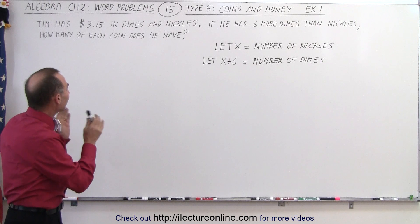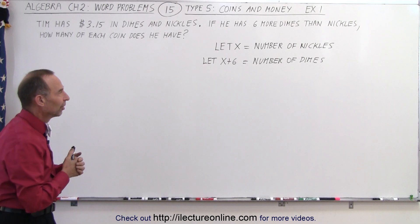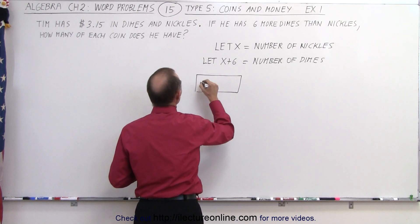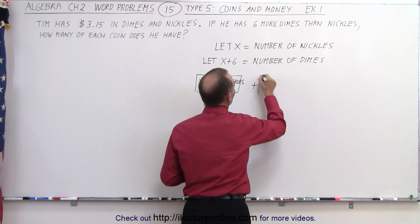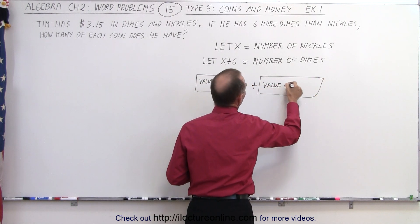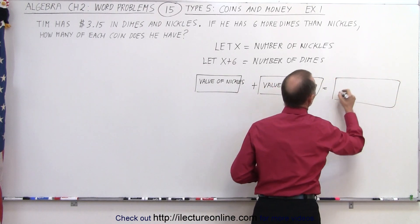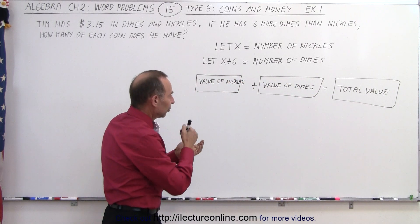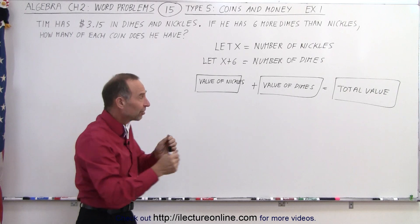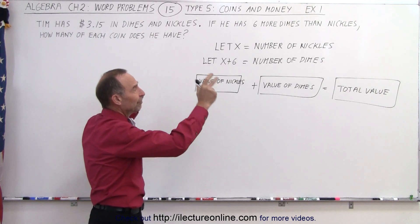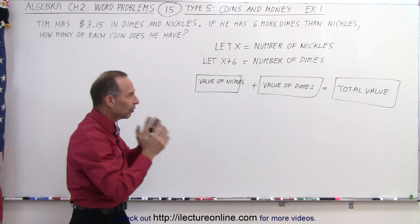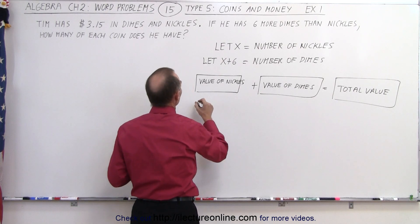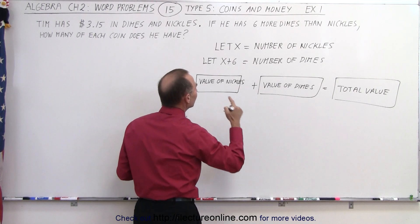Now we're also told that the total value of these coins is $3.15. So therefore we need to come up with some sort of equation where we can say that the value of all the nickels plus the value of the dimes equals the total value of all the coins. And that's the key to coming up with an equation. So we define the number of nickels and the number of dimes in terms of x but then we define the equation in terms of the value of those coins. And the sum of all the value of all the coins adds up to the total value. So to get the value of the nickels we're going to multiply the number of the nickels times the value of each nickel.